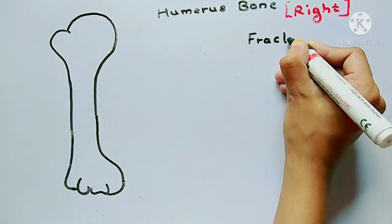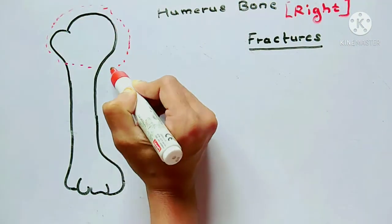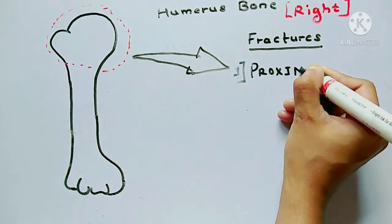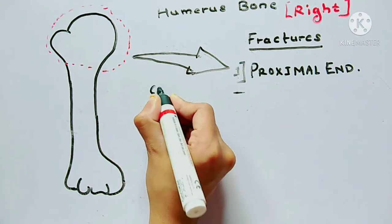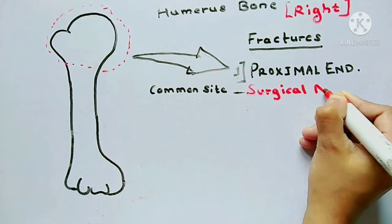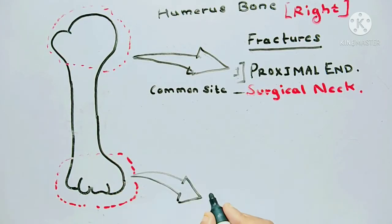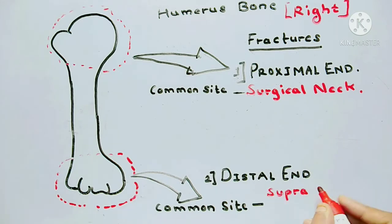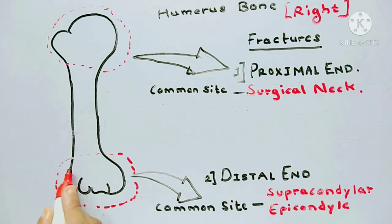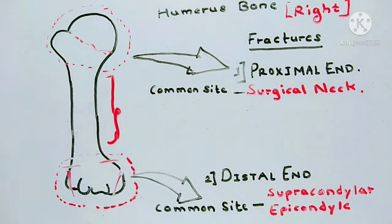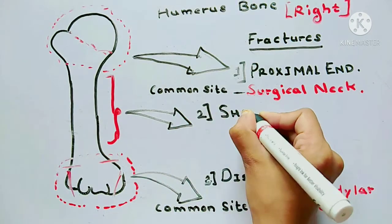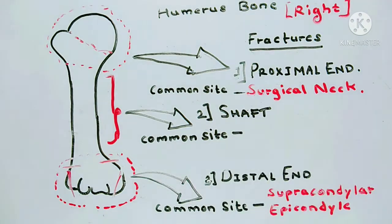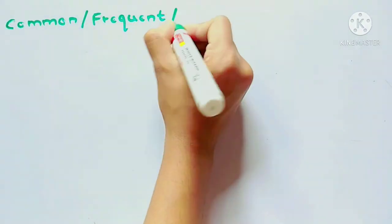In this video I'm dividing the fracture sites into three parts. The first part is the proximal end — the upper end of the humerus — where the common site of fracture is the surgical neck. The second part is the distal end, where the common sites are the supracondylar region and the epicondyle. The third part is the shaft, where the common site is the mid-shaft region.